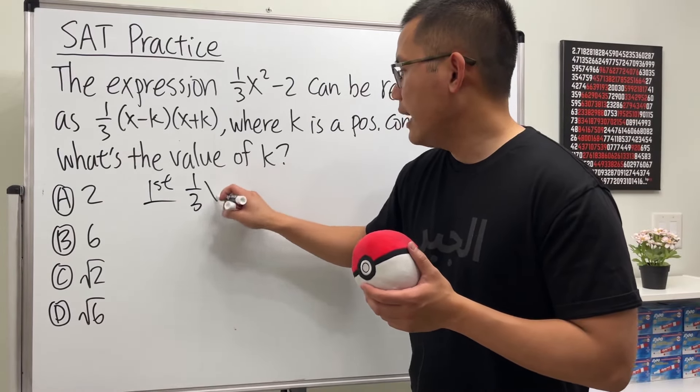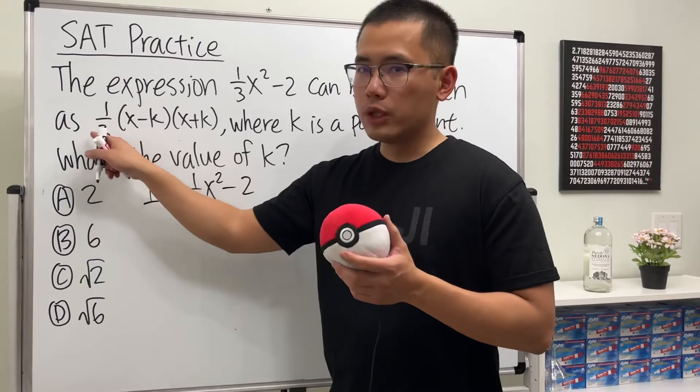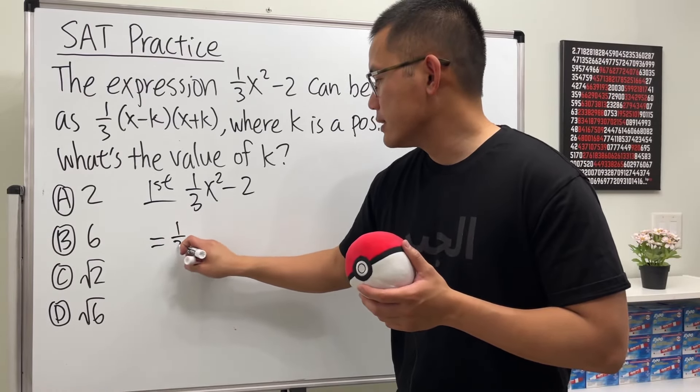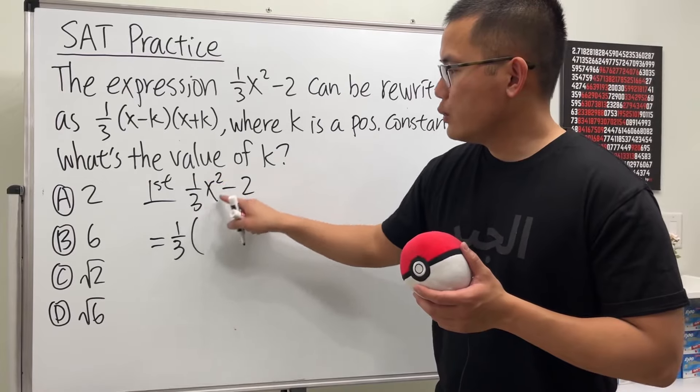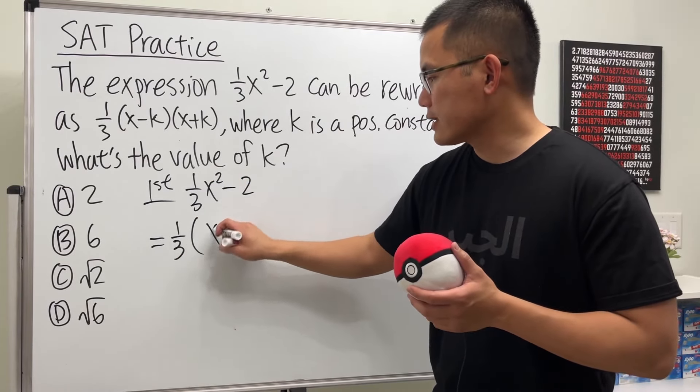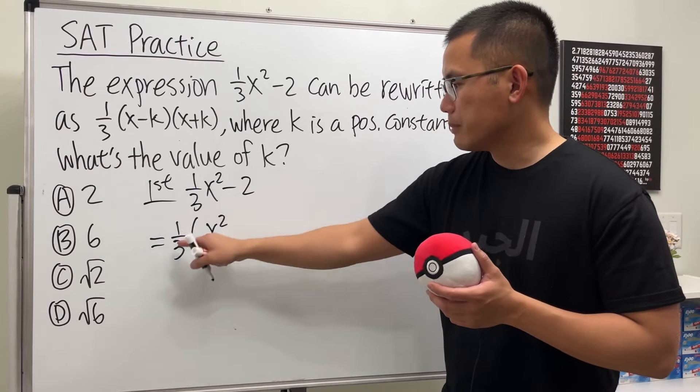1/3 x² - 2. We see that we have the 1/3 all the way in the front, so that means we are going to factor out the 1/3. So put down the 1/3, and then originally we have 1/3 x² here, but we took out the 1/3, so we're left with x². And originally we have a minus 2, but we took out the 1/3.